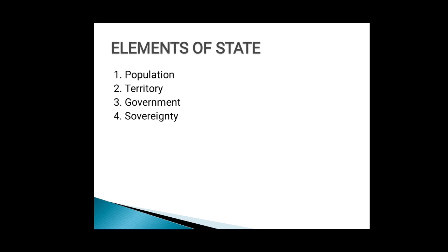Our next point is: what are the elements of the state? There are four elements of the state. Number one is population, the second one is territory, the third one is government, and the fourth one is sovereignty. We will see them one by one.